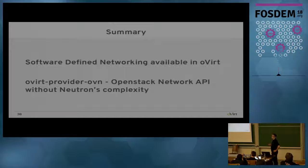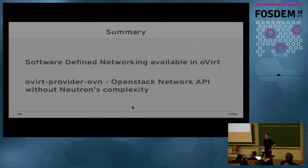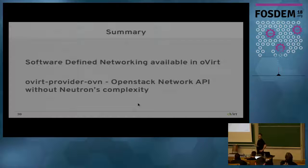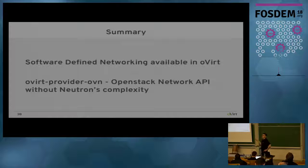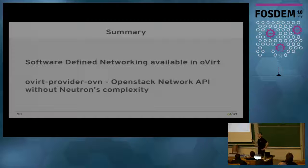We are getting close to the end. The summary of what I would like you to remember from this session: one — in oVirt, it's not only native oVirt networking anymore; we have OVN-based networking available too, using the ovirt-provider-ovn. The other item: if you are looking for a nice SDN solution — a small one — you can use OVN using our provider and the OpenStack Networking API, and deal with high-level OpenStack networking abstractions. Thank you.